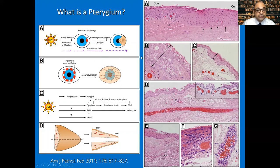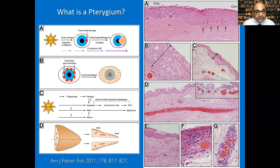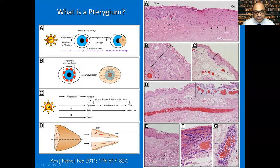One supporting piece of evidence for the UV theory is that the nose blocks UV rays that would otherwise be focused on the temporal limbus as light passes through the cornea. Therefore, pterygium is much more common nasally because temporally there is no protection. UV rays coming in from the temporal side get focused as they pass through the cornea and concentrate on the nasal limbus and nasal conjunctiva — that is where the degeneration occurs.